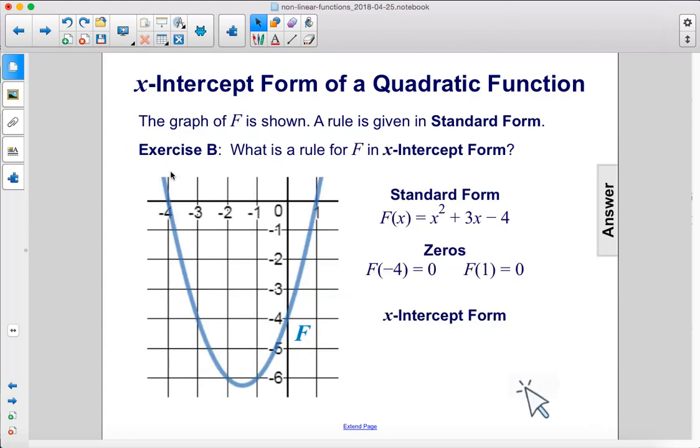Exercise B: What is a rule for f in x-intercept form? We have standard form here, x squared plus 3x minus 4, and the zeros are when x equals negative 4 and 1. So we just put positive 4 and negative 1. That's for our x-intercept form.